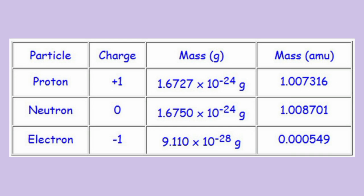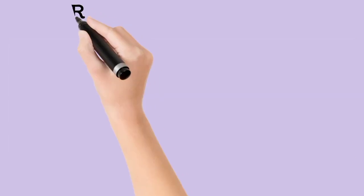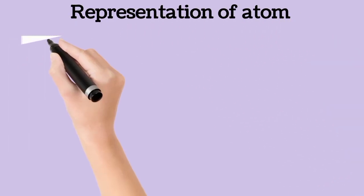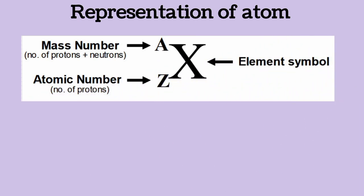The mass of a proton and neutron is 1.6727 × 10⁻²⁴ grams. The mass of an electron is 9.110 × 10⁻²⁸ grams. In atomic mass units, the mass of a proton is 1.007316, the mass of a neutron is 1.007010, and the mass of an electron is about 2000 times less than that of the proton and neutron.